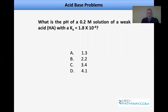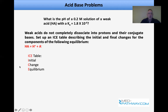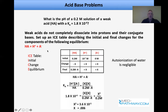Now for MCAT acid-base problems. A classic question: what is the pH of a 0.2 M solution of a weak acid with Ka = 1.8 × 10⁻⁴? Answer choices are 1.3, 2.2, 3.4, and 4.1. Since it's a weak acid, it won't completely dissociate. Set up an ICE table — initial, change, equilibrium. The initial concentration of HA is 0.2 M, H⁺ is effectively zero (10⁻⁷ from water autoionization is negligible), and the initial conjugate base is zero. At equilibrium we lose −x of HA and gain +x each for H⁺ and the conjugate base.